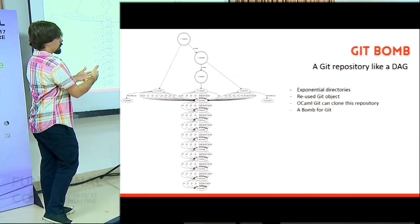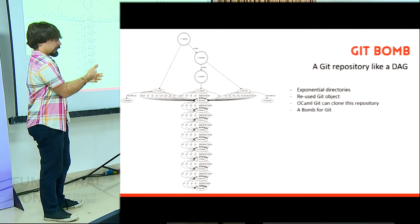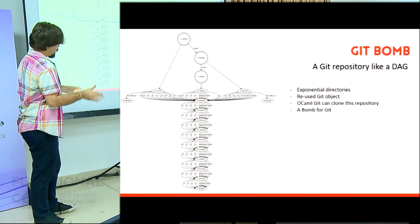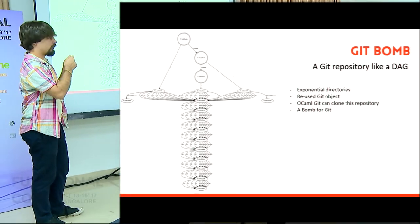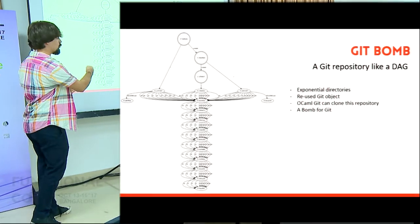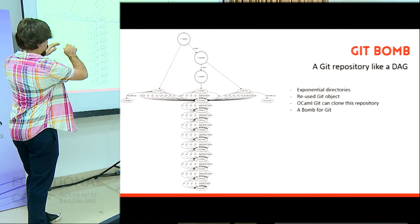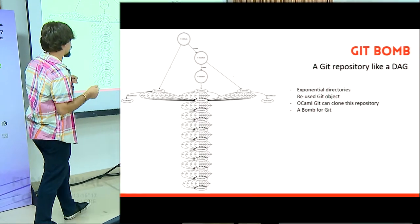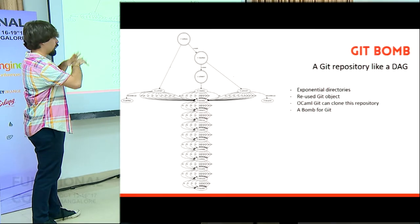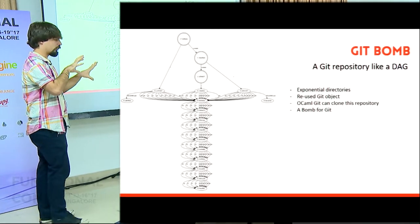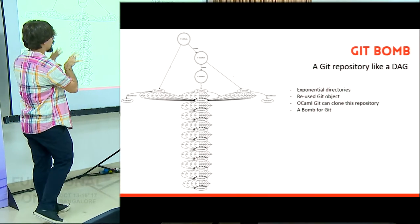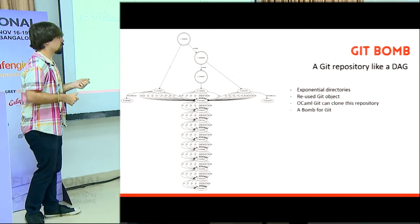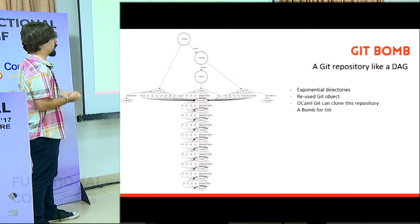This tree points to nine other directories, and those point to the same value of the directories, and again, and again. Finally, we have nine files — nine links which contain exactly the same value, like just 'hello world'. Because it's an exponential directory structure — it's nine to the power of nine directories — this shows you we reuse the Git object. And OCaml Git can clone this Git repository, not Git. So it's good news. It's like a bomb for Git.